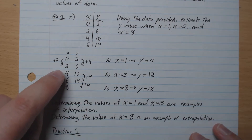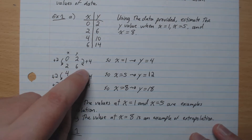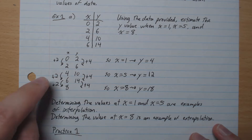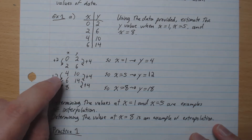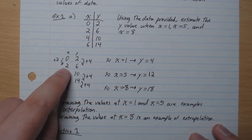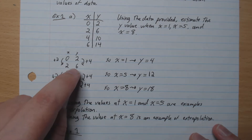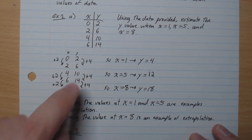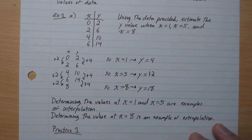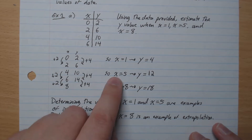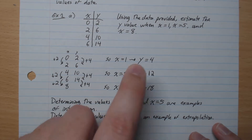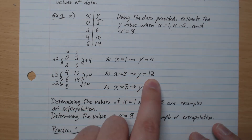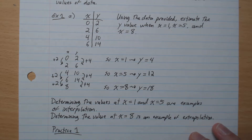When x equals 5, same thing here. We're going plus 2 and plus 4. So from 4 to 5 we're going plus 1, and then plus 2 to go from 10 to 12. So when x equals 5, we can estimate that y is 12.